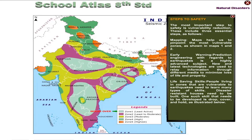Life-saving skills. People living in zones that are vulnerable to earthquakes need to learn many types of skills. Disaster-resistant houses need to be built. One such skill that needs to be developed is drop, cover and hold, as illustrated below.